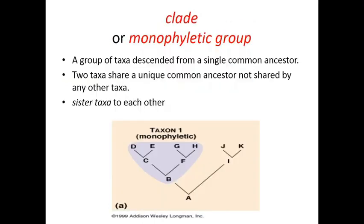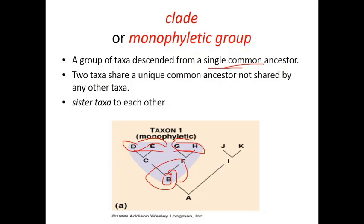It is also called an Operational Taxonomic Unit. Another terminology used in phylogenetic trees is monophyletic group and paraphyletic group. Monophyletic group means a group of taxa — such as d, e, g, h — that have a single common ancestor. If a single common ancestor, say b, splits into these taxa, such a branching is called a clade or monophyletic group. These are called sister taxa.